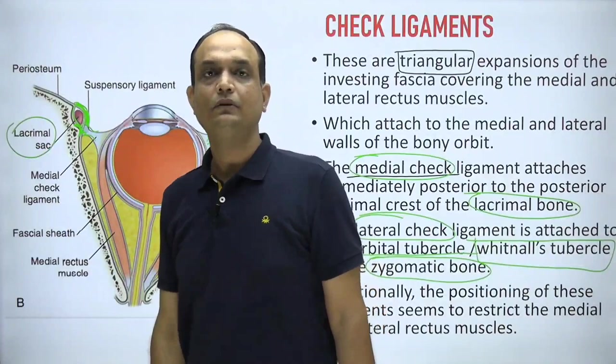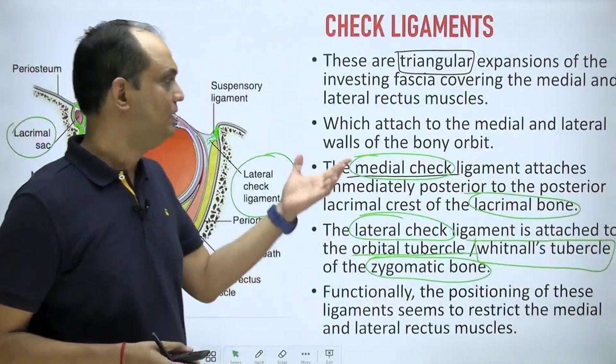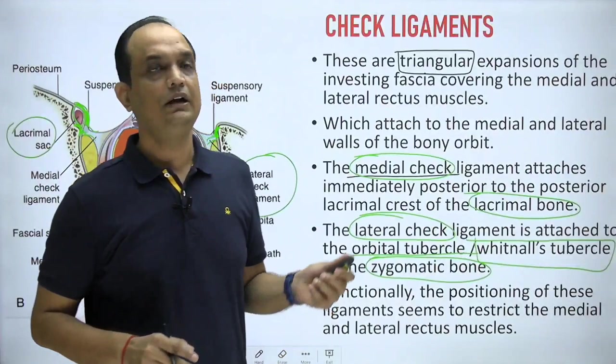The function of the check ligaments is to restrict the medial and lateral rectus muscles. In the diagram, the lateral check ligament attaches at the Whitnall tubercle on the zygomatic bone, while the medial check ligament attaches behind the lacrimal crest. To summarize: the eyeball moves inside the facial socket formed by the tenons capsule, which is present inside the orbit, and the inner lining of the orbit is the periorbita — the periosteum of the orbital bones.